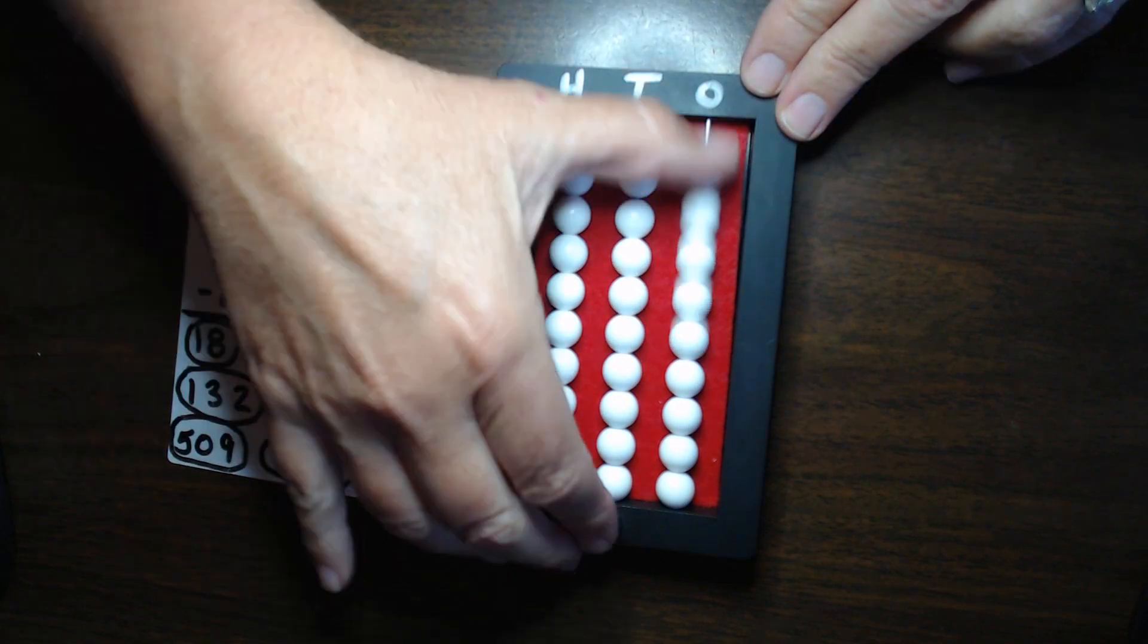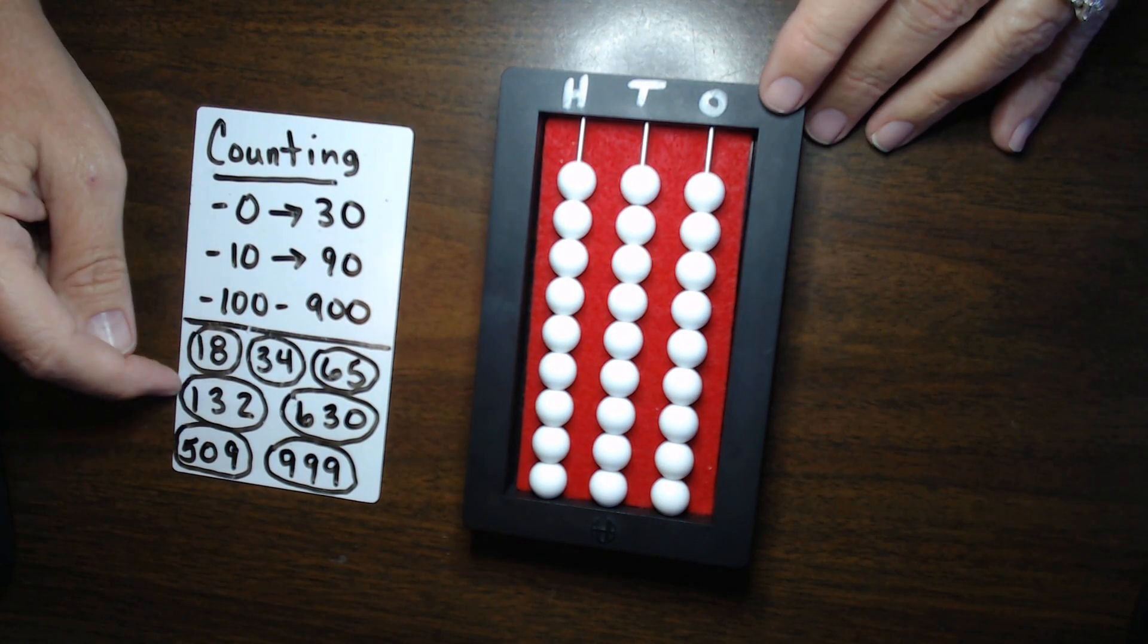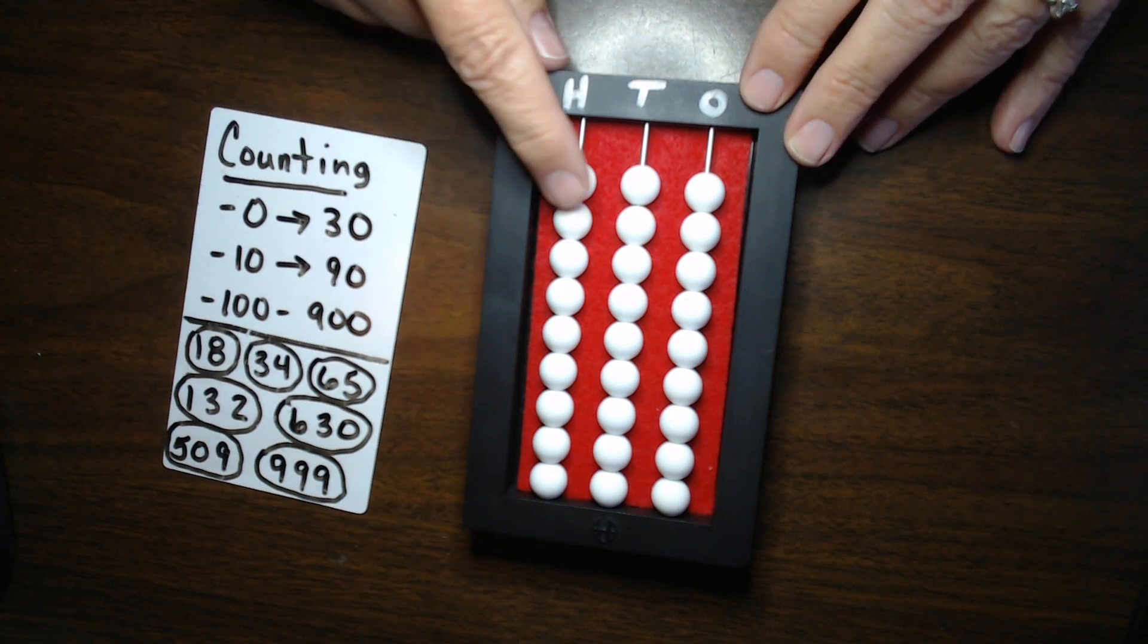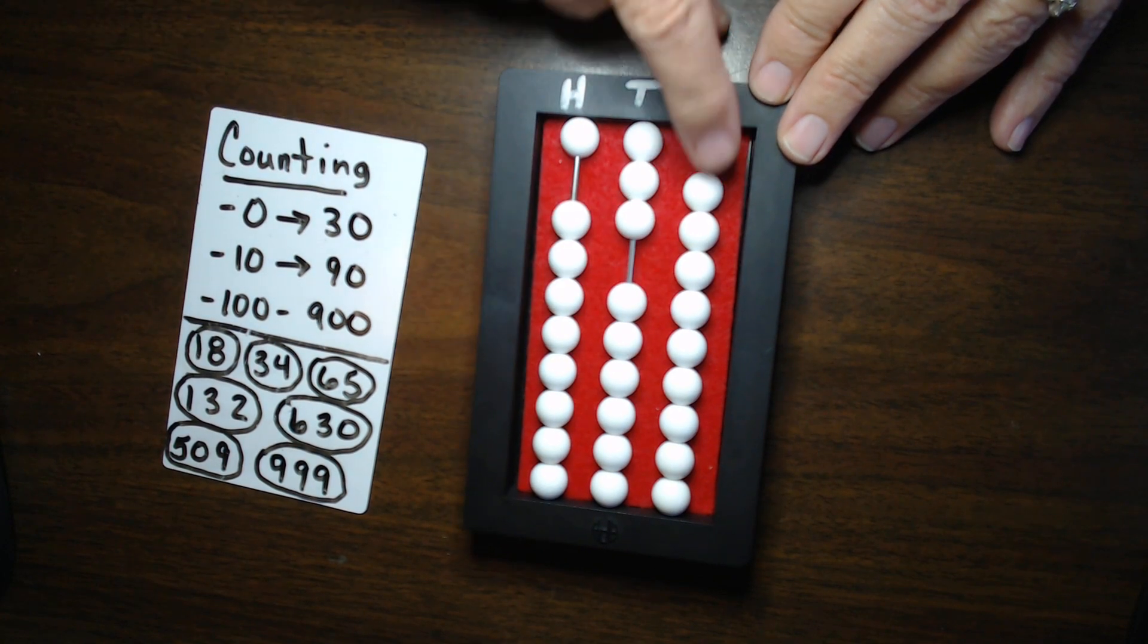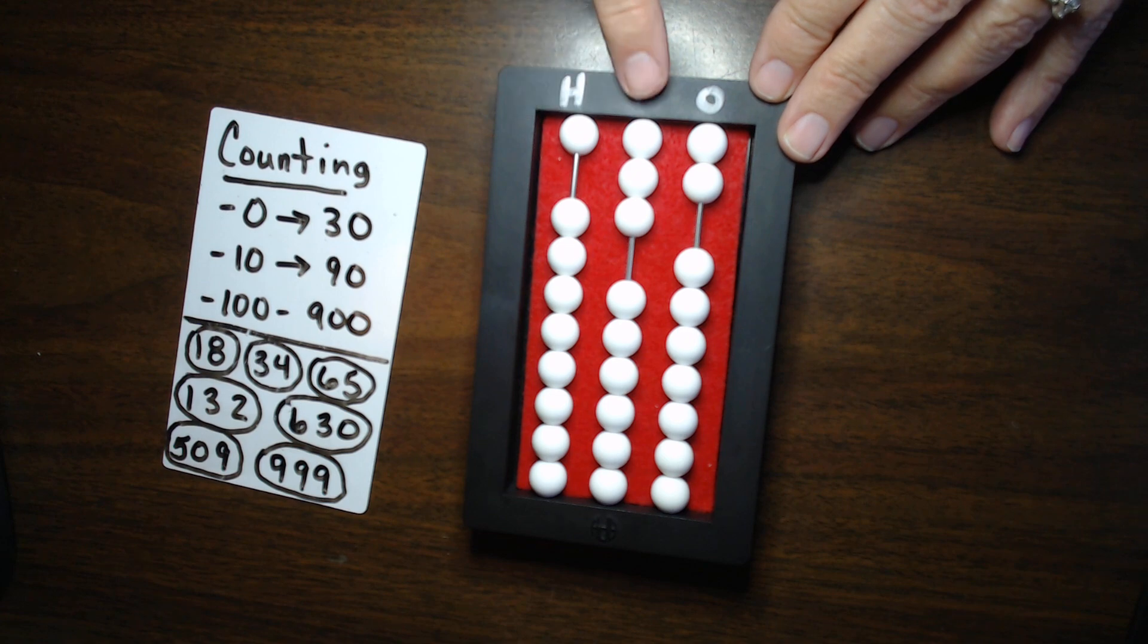Now, let's practice some three-digit numbers going over to the 100s column. So, 132. 100. So, we're going to go to our 100s column. 100, 30, 10, 20, 30, 2, 1, 2. So, I have just set the number 132.